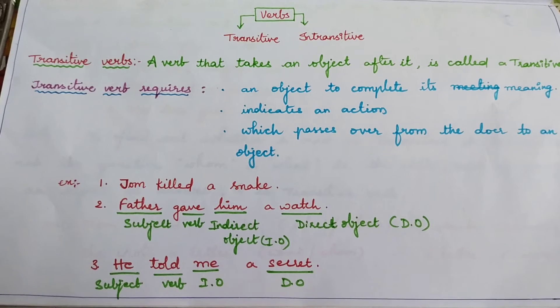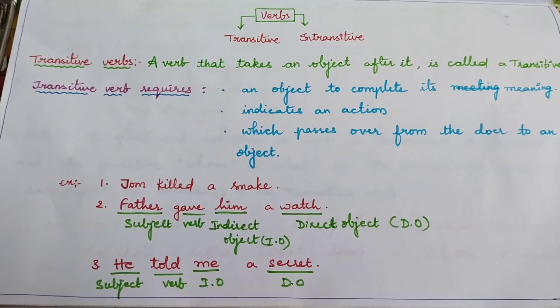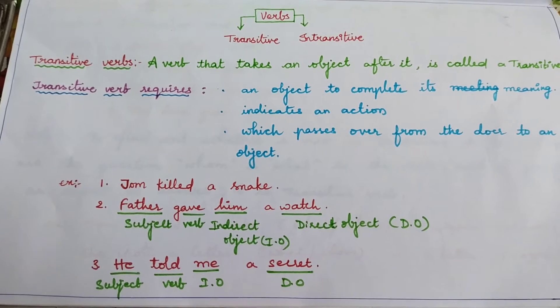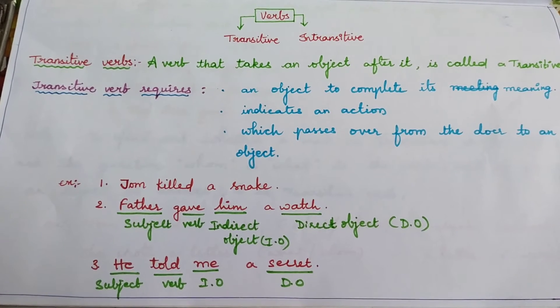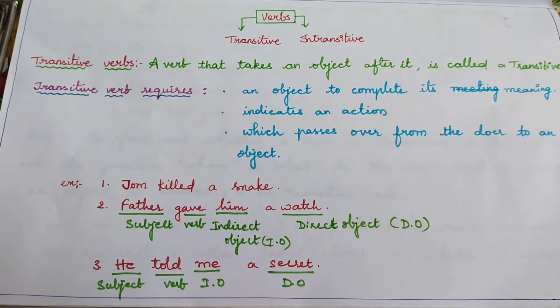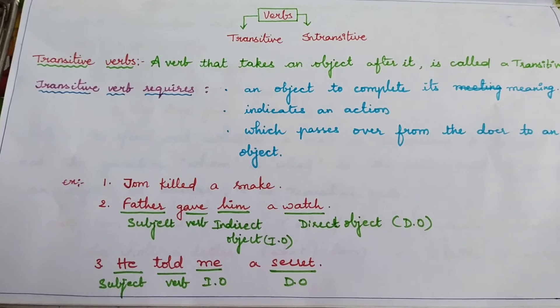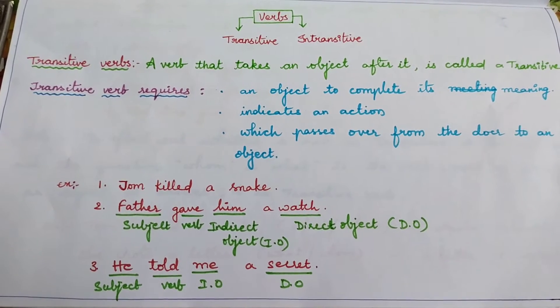If you can get answer for what, it will be direct object. Father gave him what? A watch. To whom? Him. If you get answer for whom, it will be indirect object. Here, giving is an action transferred from father to him.